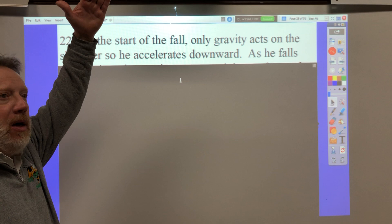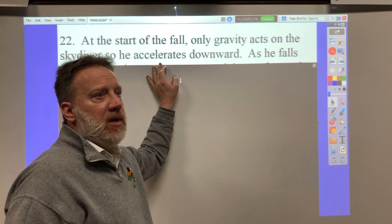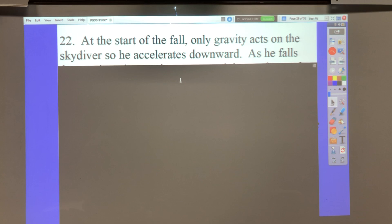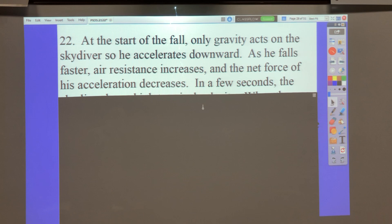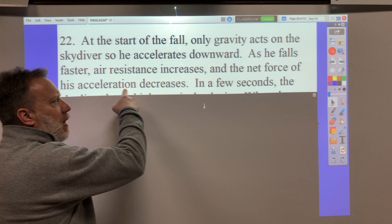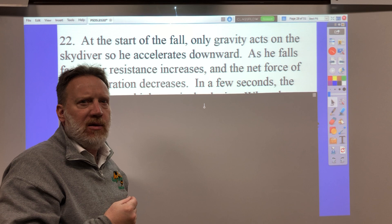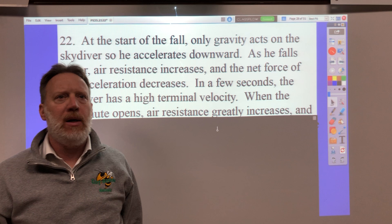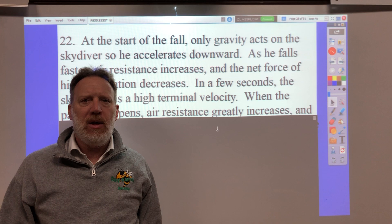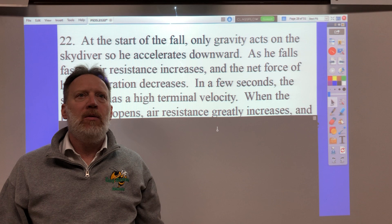So at the start of the fall, when Felix Baumgartner first jumps out of the high altitude balloon, gravity's the only force acting on you, so he picks up speed, and accelerates downward. But very quickly, air resistance increases. Within a few seconds, you're going very, very fast, and the air resistance increases to the point where the net force will get less. Your acceleration will get less, so you're getting faster, but you're not getting faster as quickly. And within a few seconds, you will hit terminal velocity.